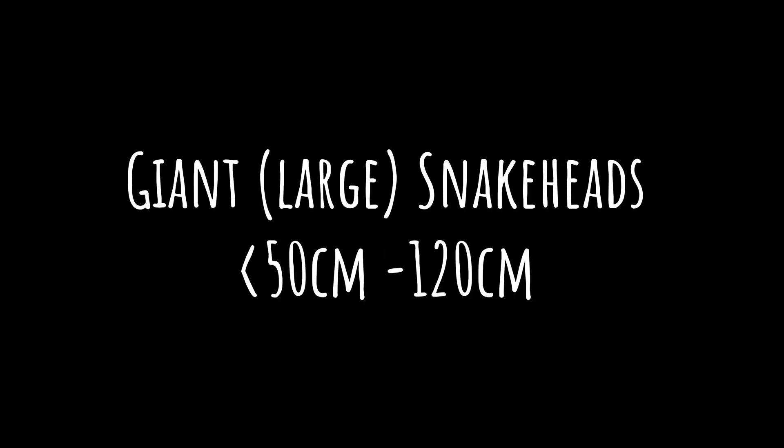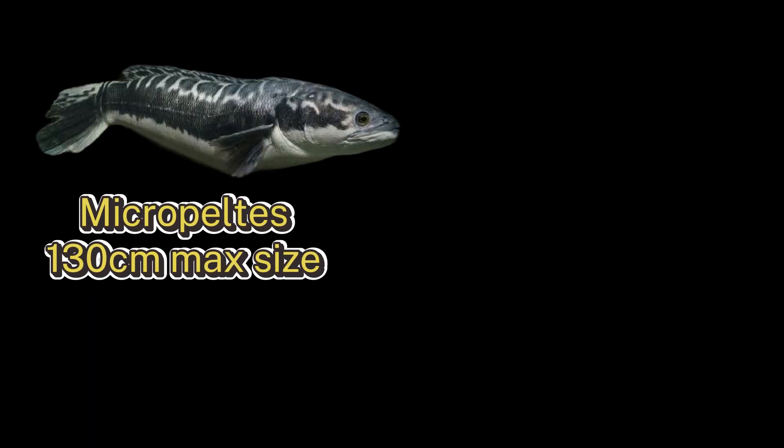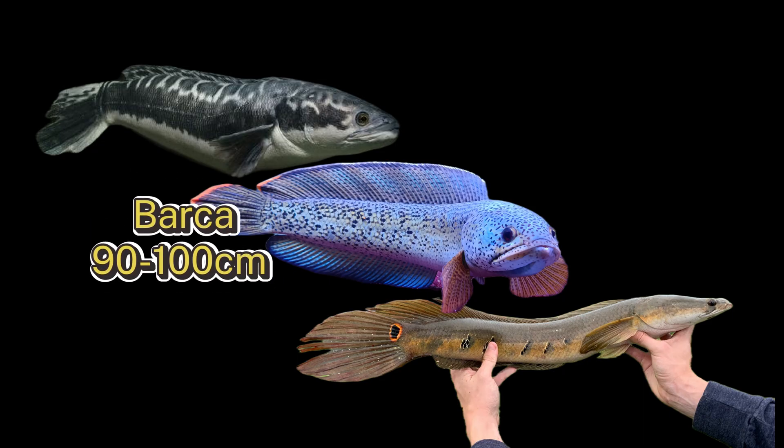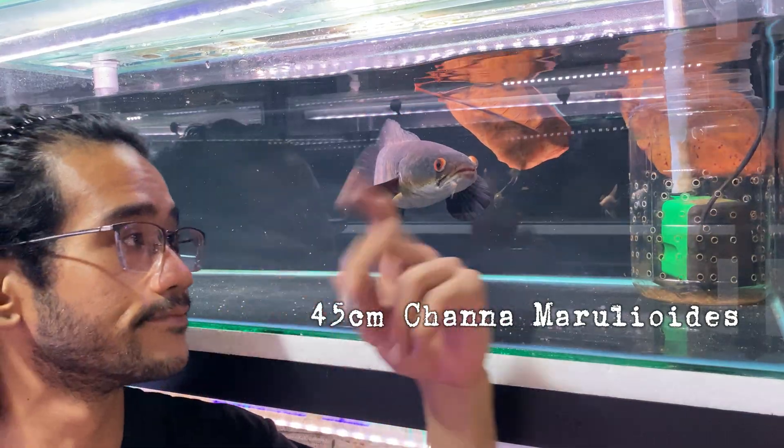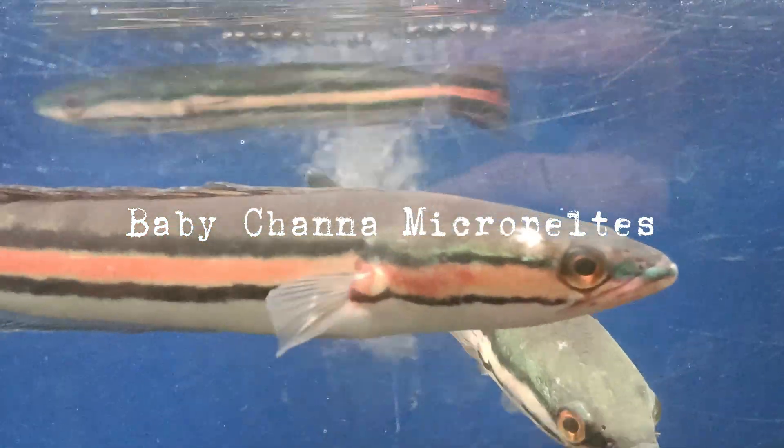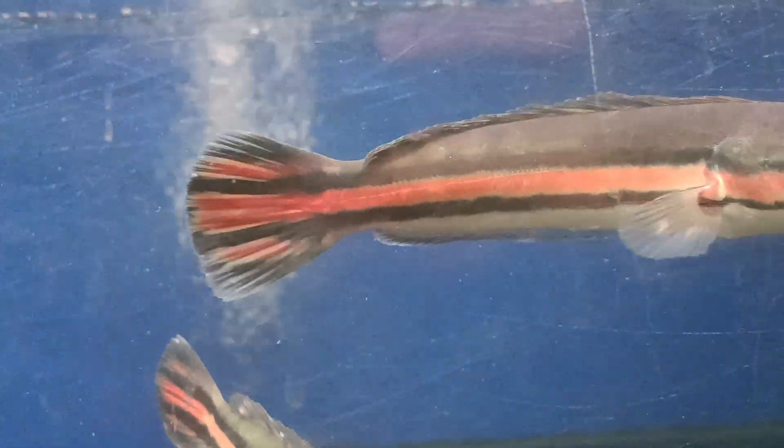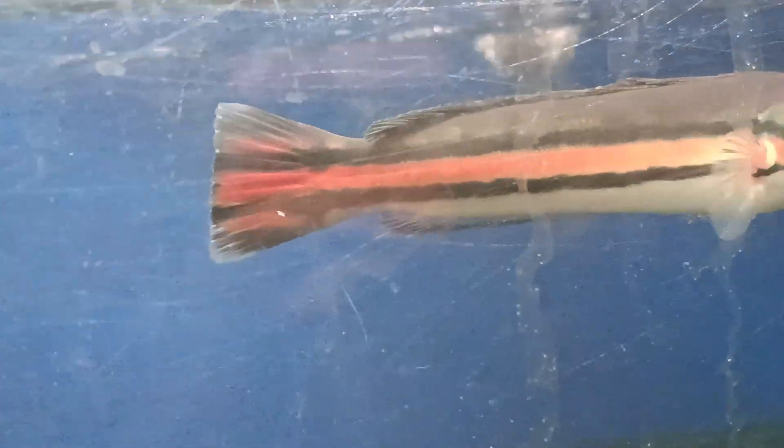Lastly, you have the giant snakeheads. These can grow from 50 centimeters up to 120 centimeters — anywhere from three feet up to six feet is considered large-sized snakehead. Examples include chana micropeltis, chana marulius, chana barka, and chana argus. These are harder to manage and you need to really consider their maximum adult size. They grow really fast — in a month they can go up two to three inches.